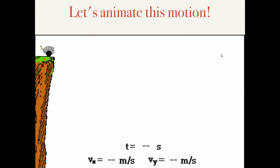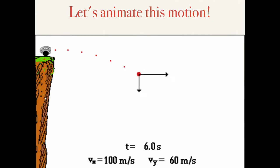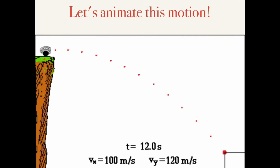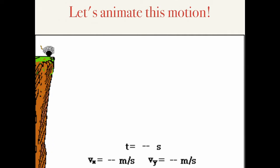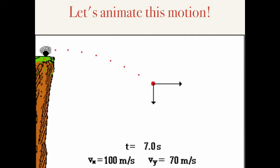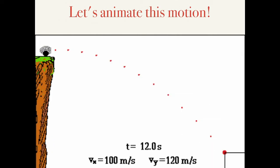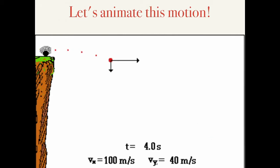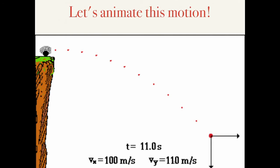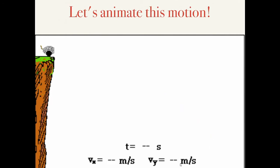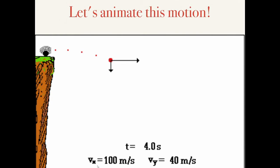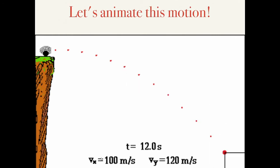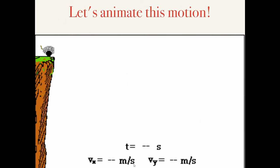I'll animate this motion so you can see it more clearly. As you can see, vy is constantly increasing — about 10 meters per second faster each second, roughly 9.8 — while vx is constant at 100 meters per second in this case. You can clearly see the vertical velocity vector growing in size while the horizontal velocity vector does not change.